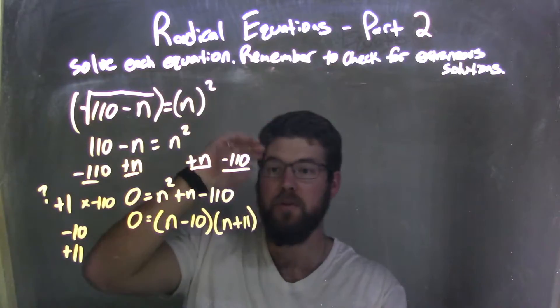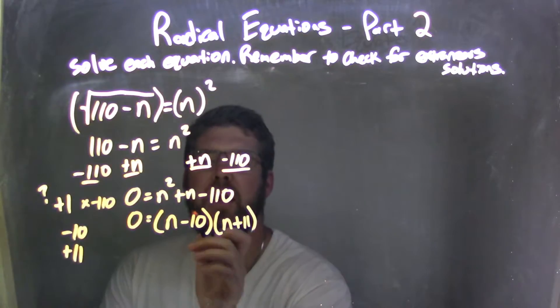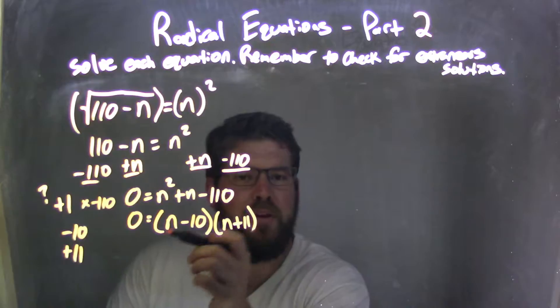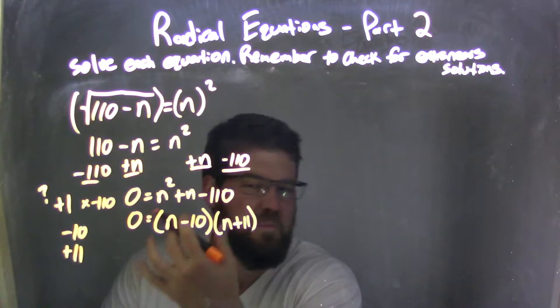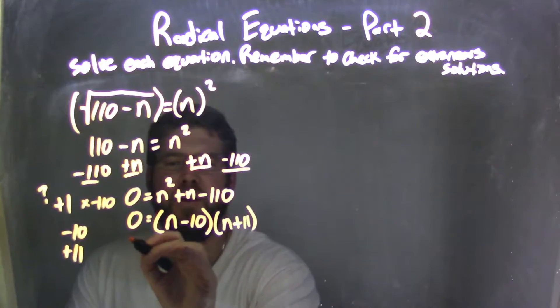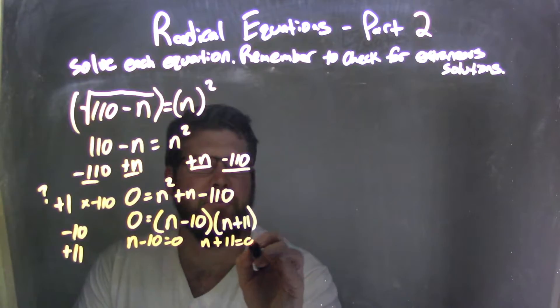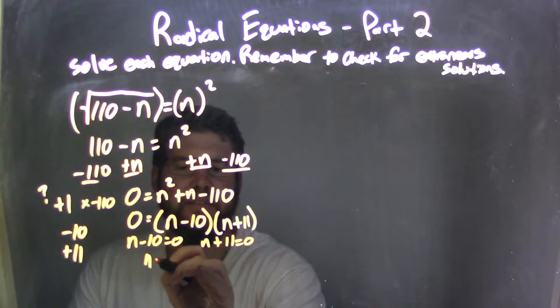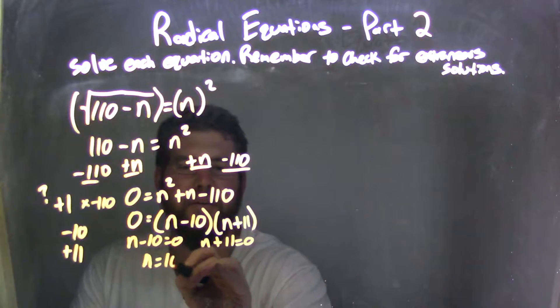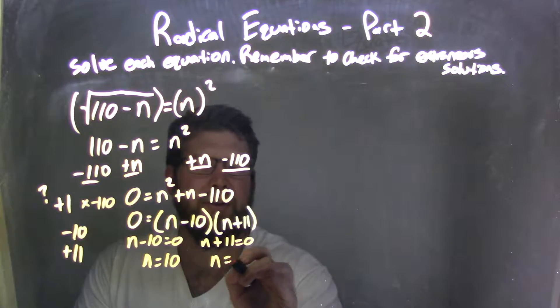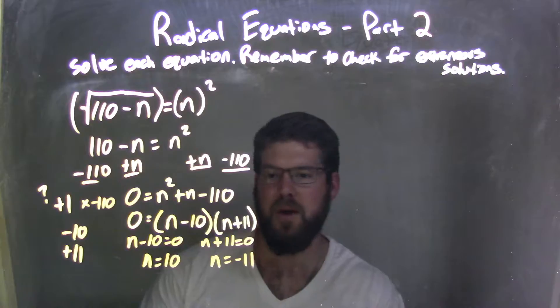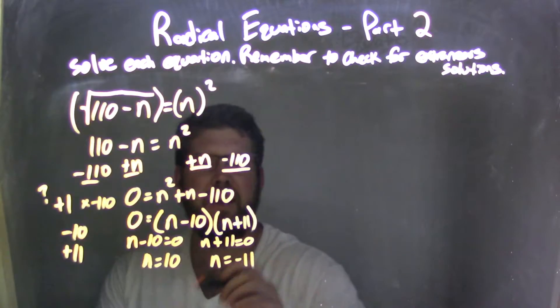Now, what that allows me to do by factoring it out, I can set each parenthesis equal to 0 to solve, which becomes pretty easy to do now. We have n minus 10 equals 0, and n plus 11 equals 0. Well, that just means n equals a positive 10, and n equals a negative 11. So we have our two answers here, 10 and negative 11, but I need to check if any of them are extraneous.